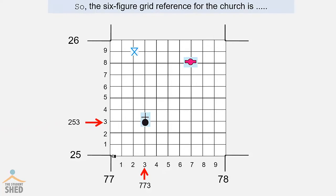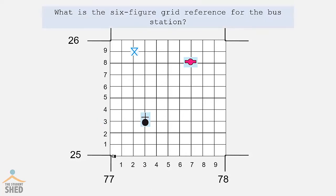What is the six-figure grid reference for the bus station? The first three digits are 777 and the second three digits are 258. So the six-figure grid reference for the bus station is 777258.